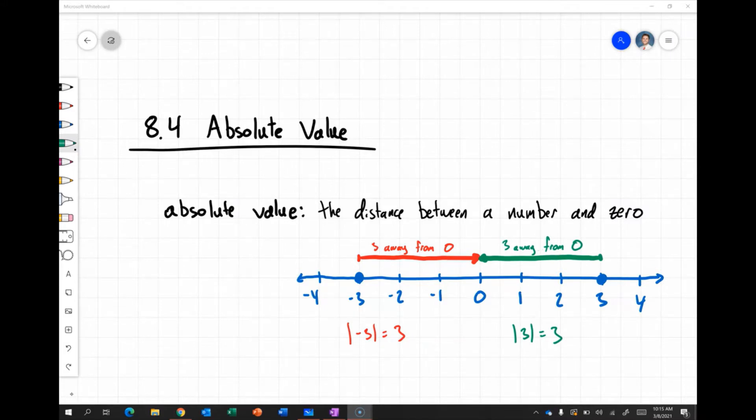I've got this number line set up for us, and it's showing us two different points. We've got the point negative three and the point positive three.